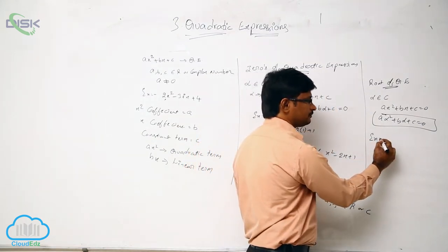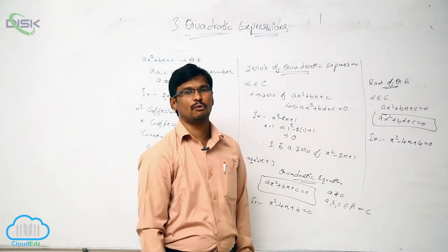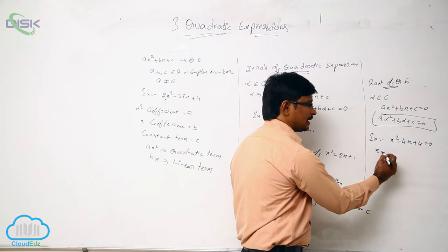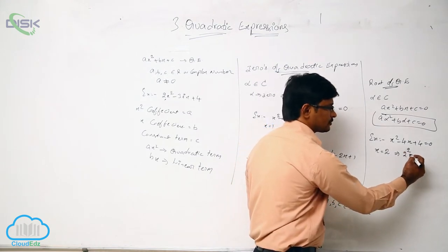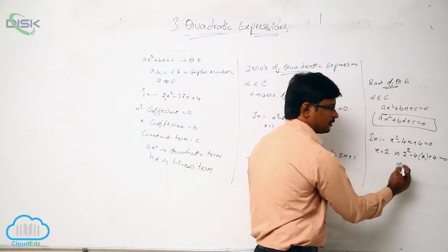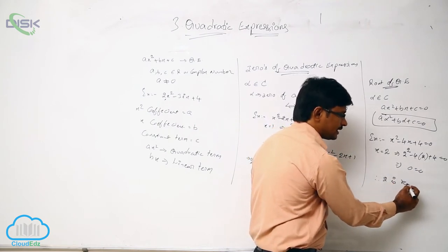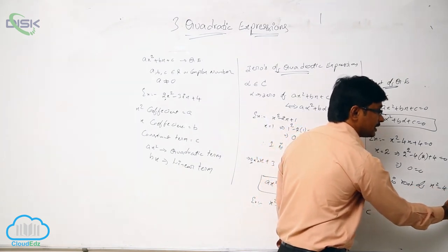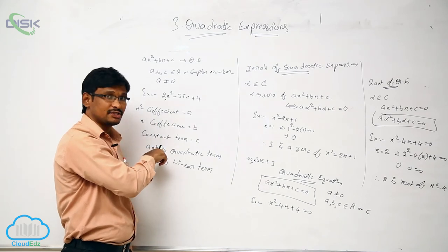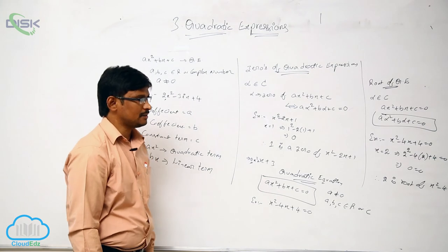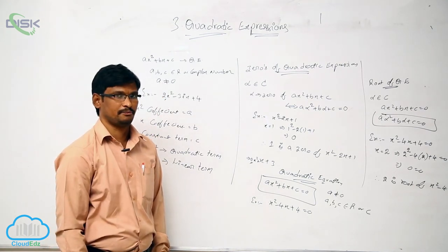For example, consider x squared minus 4x plus 4 equal to 0. Let x equal to 2. Substituting: 2 squared minus 4 times 2 plus 4 equals 4 minus 8 plus 4 equals 0. This satisfies the equation, so 2 is a root of this quadratic equation. Note that the zeros of a quadratic expression and the roots of a quadratic equation are the same.